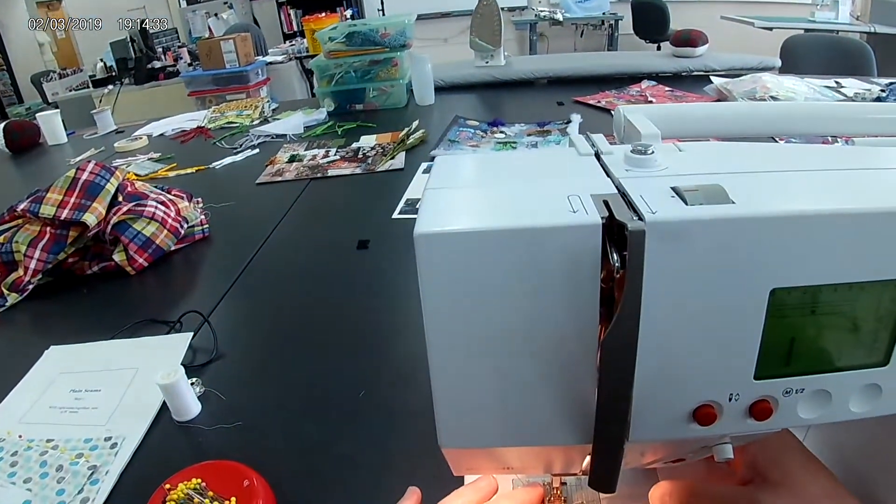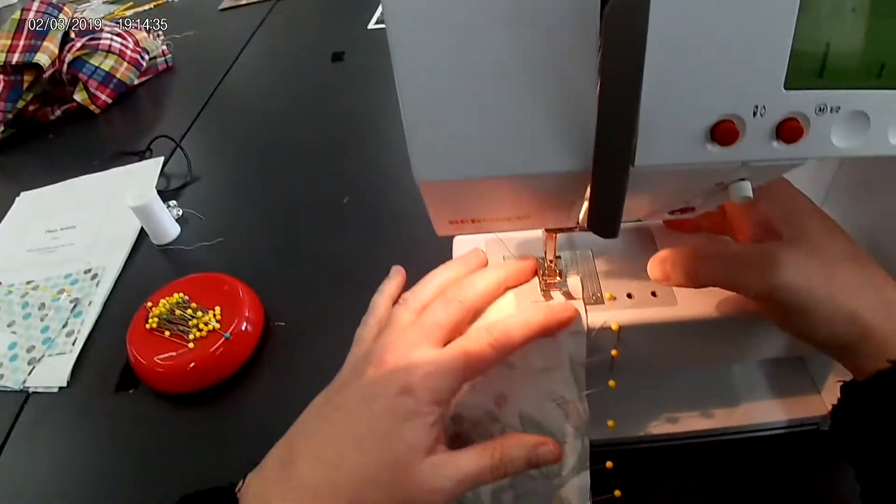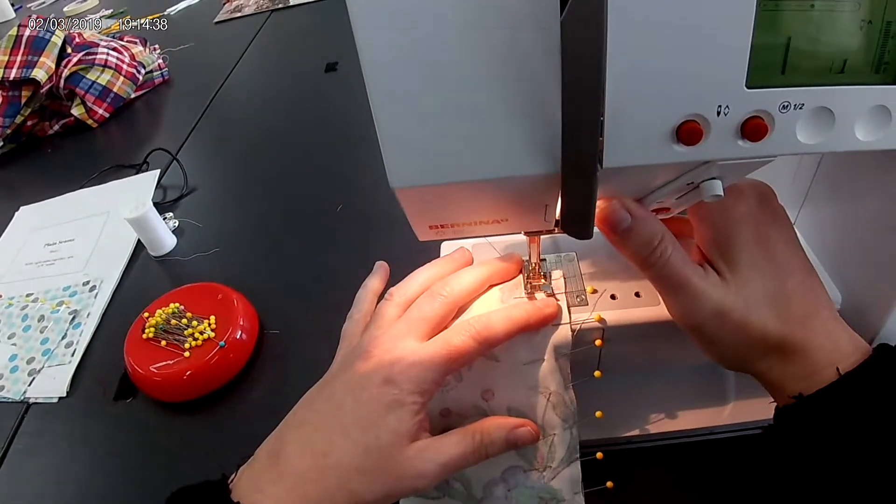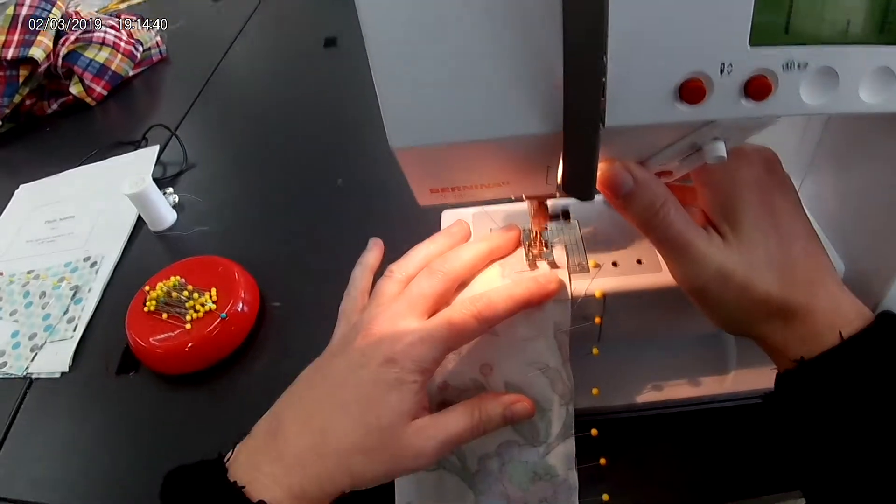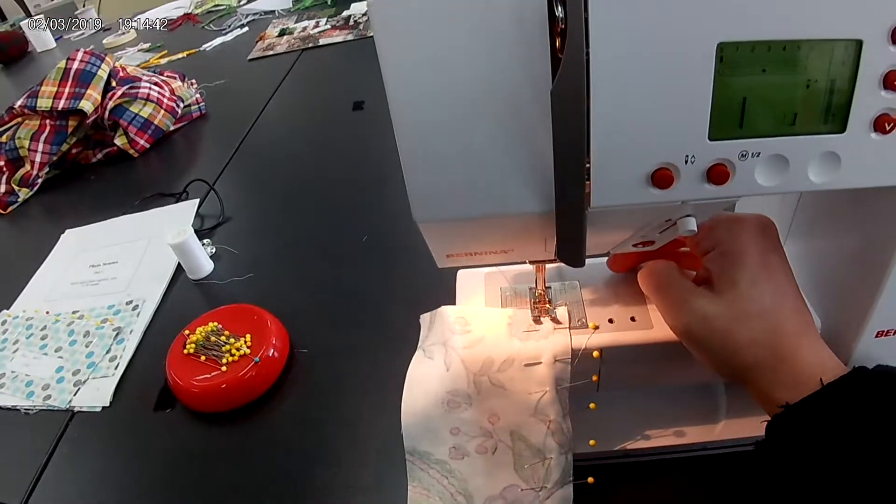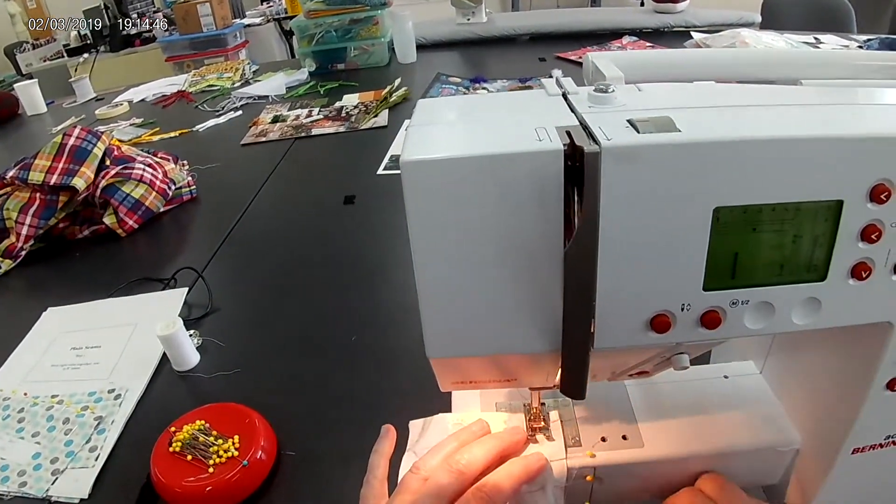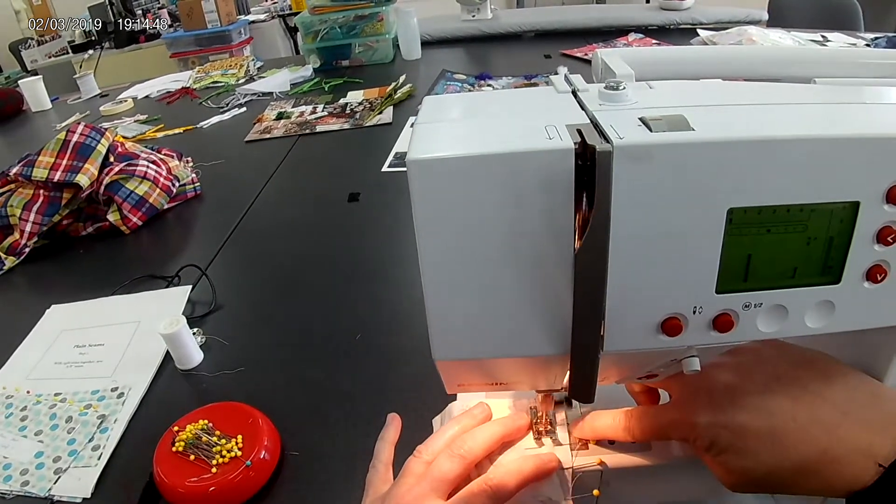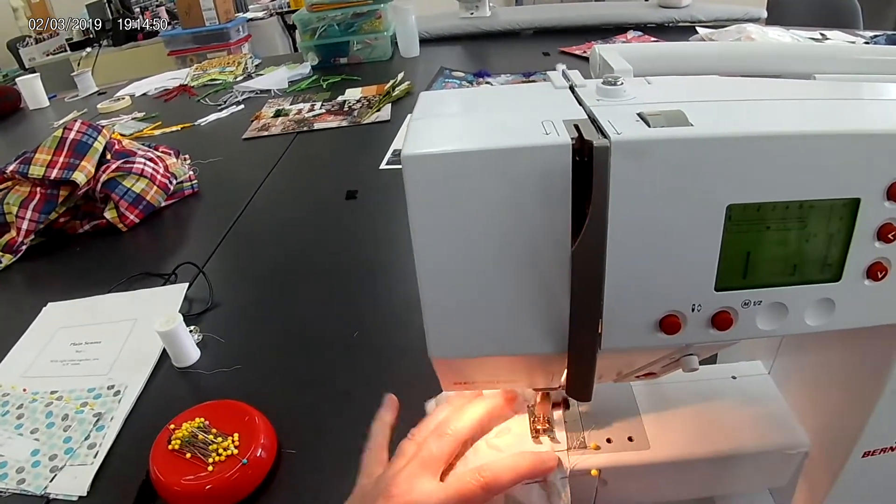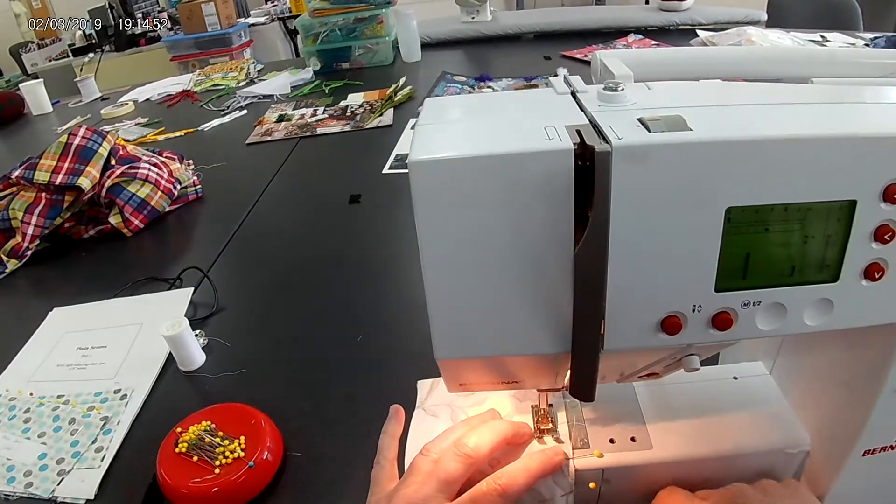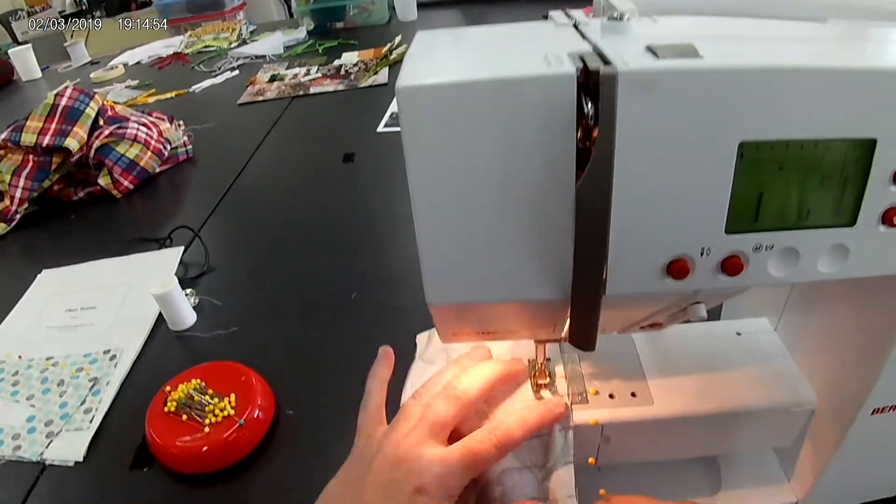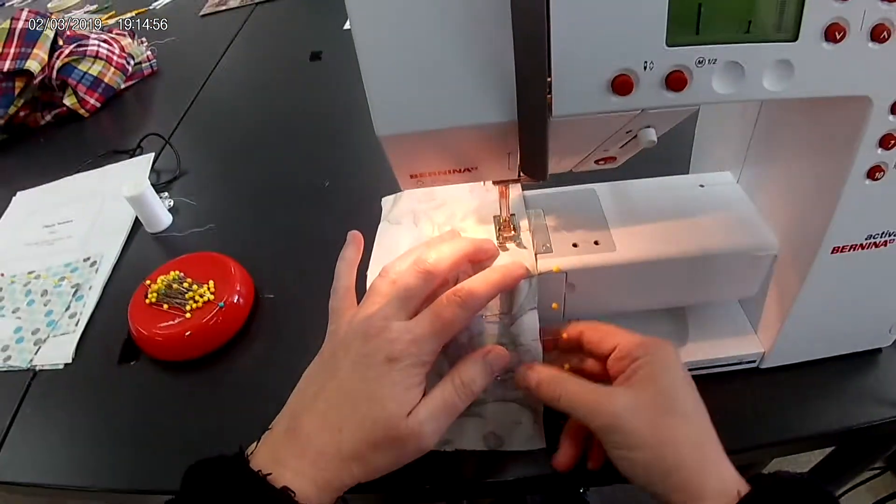I will go forward 3 stitches gently and then hold in my back button and go backwards all the way to the end of the sample. Now I will stitch straight ahead, following the 5/8ths, taking my pins out as I go. If you need to stop to pull a pin out, you can certainly do so.